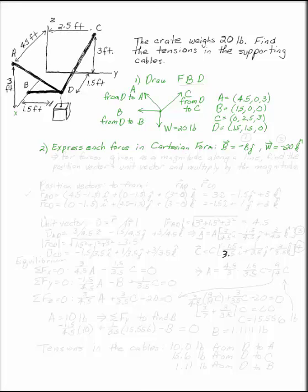The other two are not so easy. For forces given as a magnitude along a line, you want to use the position vector, unit vector, multiply. To find a position vector, you're going to do to minus from. So in this case, we're going to need A minus D and C minus D. We want to find the position vectors RAD and RCD.